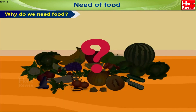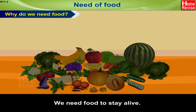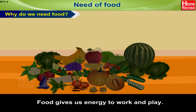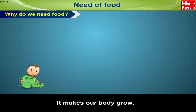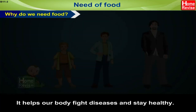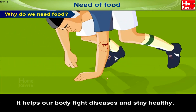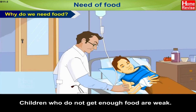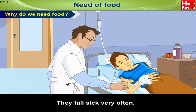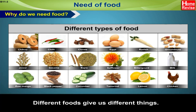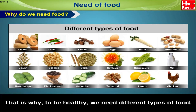Why do we need food? Well, that's simple — we need food to stay alive. Food gives us energy to work and play, it makes our body grow, and it helps our body fight diseases and stay healthy. Children who do not get enough food are weak and fall sick very often. Different foods give us different things, and that is why, to be healthy, we need different types of food.